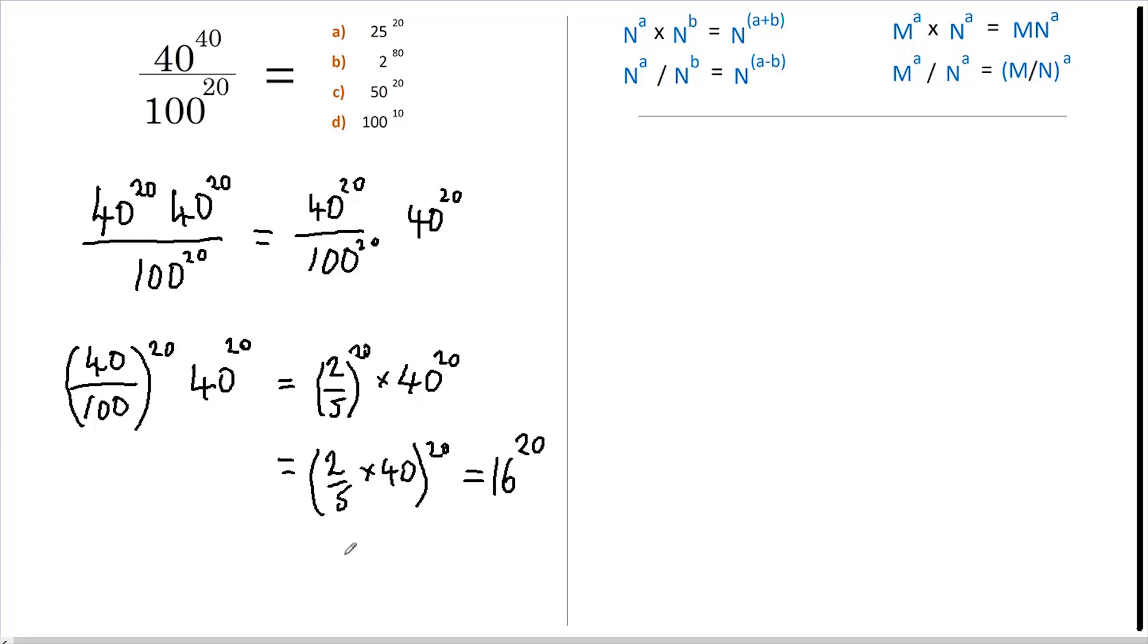16 can be written as 2 to the power of 4, all raised to the power of 20. This equals 2 to the power of 4 times 20, which equals 2 to the 80, and that's our answer.